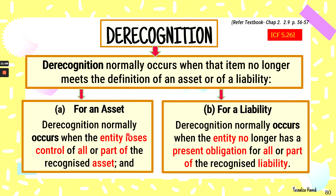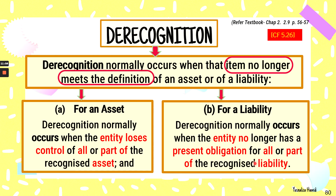De-recognition of a liability normally occurs when the entity no longer has a present obligation. For example, when taking a loan, we debit bank and credit bank loan. If the loan is now being repaid, there is a transfer of economic resources from our entity to the other entity, meaning there is no more present obligation if the loan is fully repaid — that is full de-recognition. If only part of it is paid, that may be de-recognition of just part of the recognized liability.